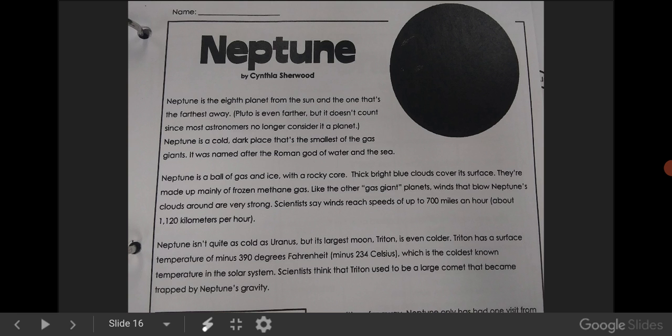Neptune is the eighth planet from the Sun and the one that's the furthest away. Pluto is even further, but it doesn't count since most astronomers no longer consider it a planet. Neptune is a cold, dark place that's the smallest of the gas giants. It was named after the Roman god of water and the sea.